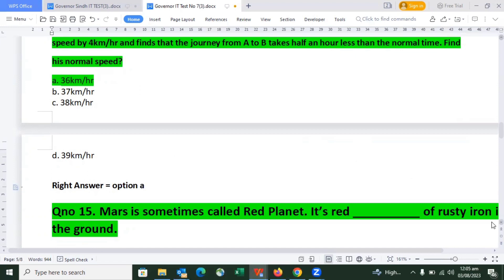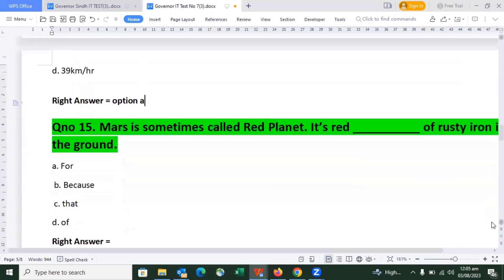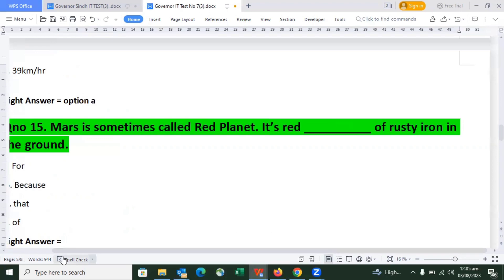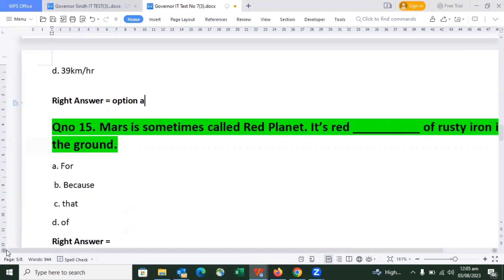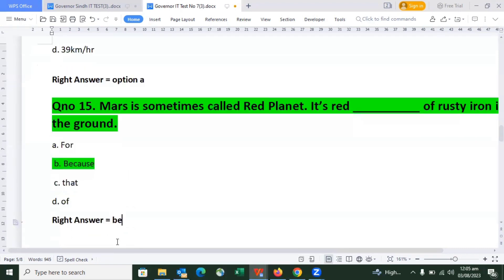Question number 15: Mars is sometimes called the red planet because of rusty iron in the ground. The right answer is option number 3, because of rusty iron.